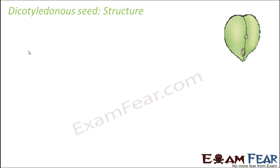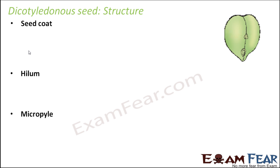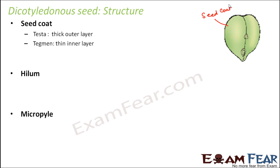From outside, a dicot seed will look somewhat like this as you can see in this picture. It has a seed coat, a hilum, and a micropyle. The seed coat is the outer layer, and it is actually made up of two layers. The outer layer is called testa and the inner layer is called tegmen. The outer layer is thicker, and the inner thin layer is tegmen.